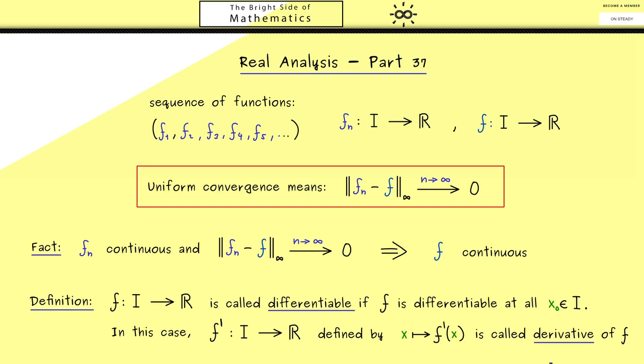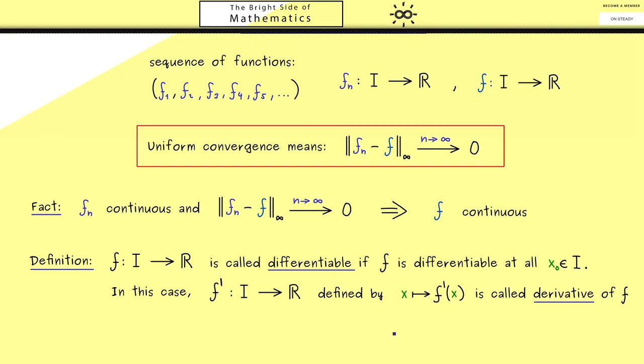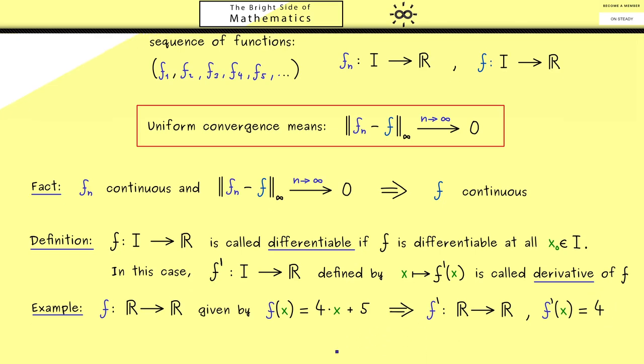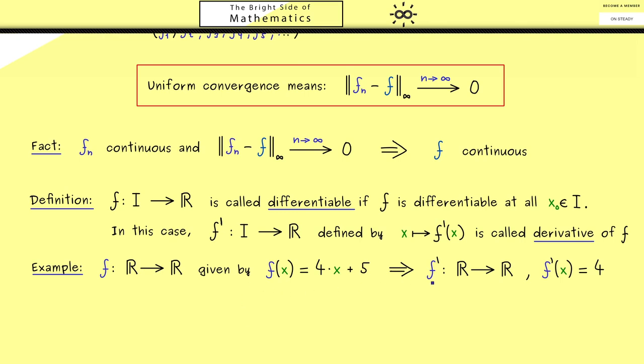Later we will have a lot of examples for derivatives but maybe here let's recall what we already know. If we have a linear polynomial maybe given by f(x) = 4x + 5, then we know it's differentiable everywhere. And we know the derivative function f' is given by the constant function with constant 4. Of course the important fact here is that we get immediately a new function f' with the same domain as the original function.